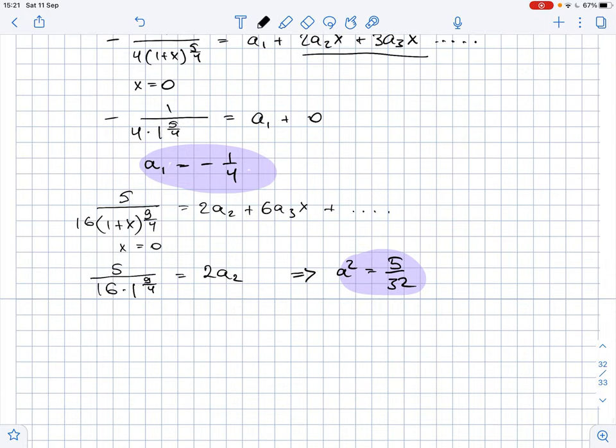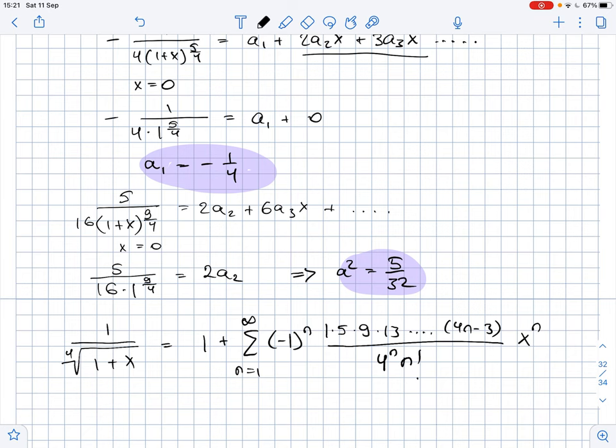Okay, now we keep on doing the same process and keep the terms together and finally we get that 1 over 4th root of 1 plus x equals 1 plus the sum of negative 1 to the power of n times 1 times 5 times 9 times 13 and so on until 4n minus 3. This thing is divided by 4 to the power of n times n factorial and this whole thing is multiplied by x to the power of n.